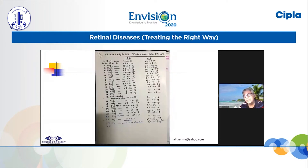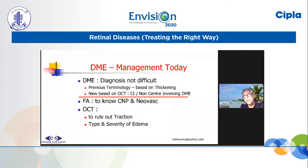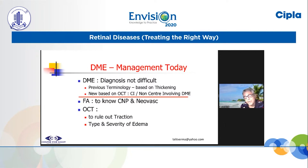This is another patient who taught me the importance of monitoring all these patients. Today DME diagnosis is not very difficult. There are a lot of classifications, but neuroclassification based on OCT is pretty good. But even in the OCT era, we must remember FA. All my decisions are based on vision, FA, and OCT picture.